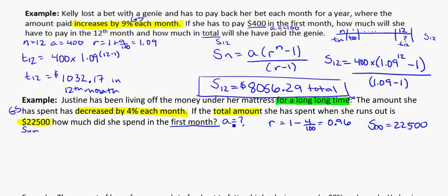And they want to know the first month. So my infinite sum formula is equal to infinite sum A over bracket 1 minus R. So using what we know, 22500 is equal to A over bracket 1 minus R, which is 0.96 bracket.